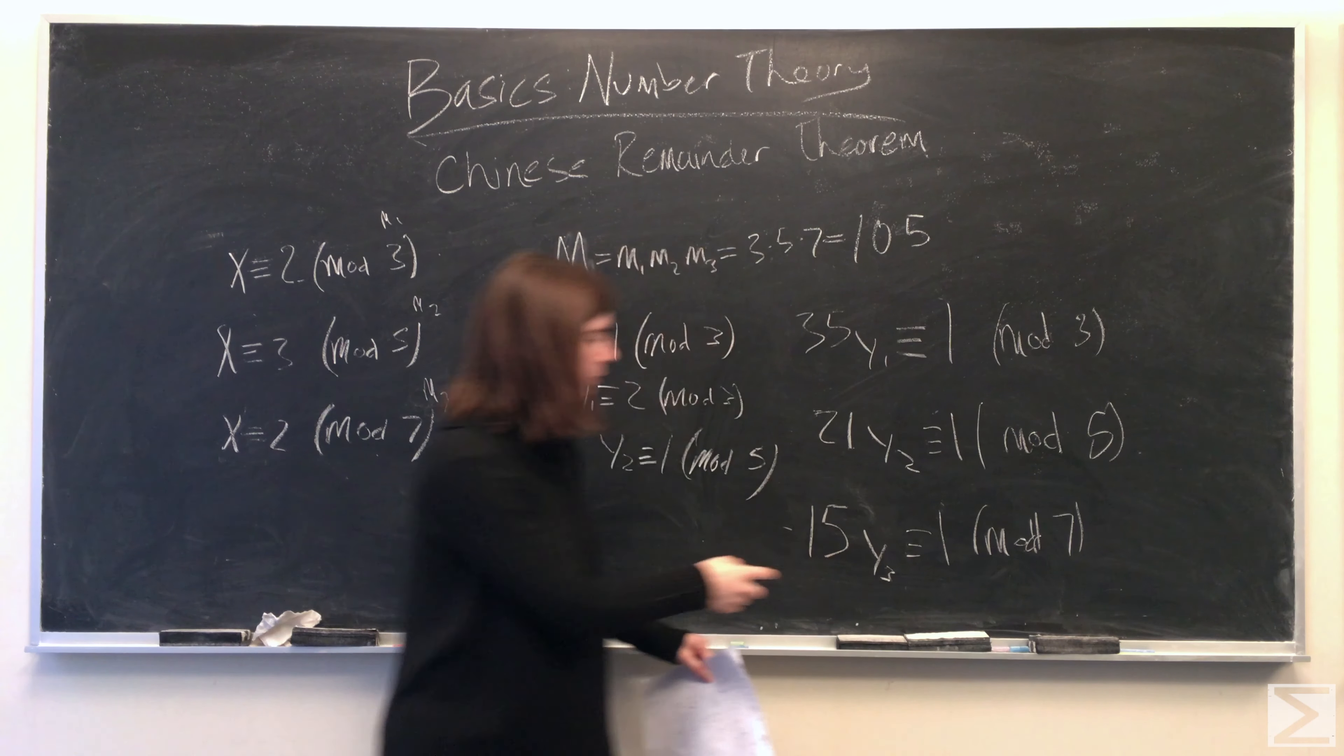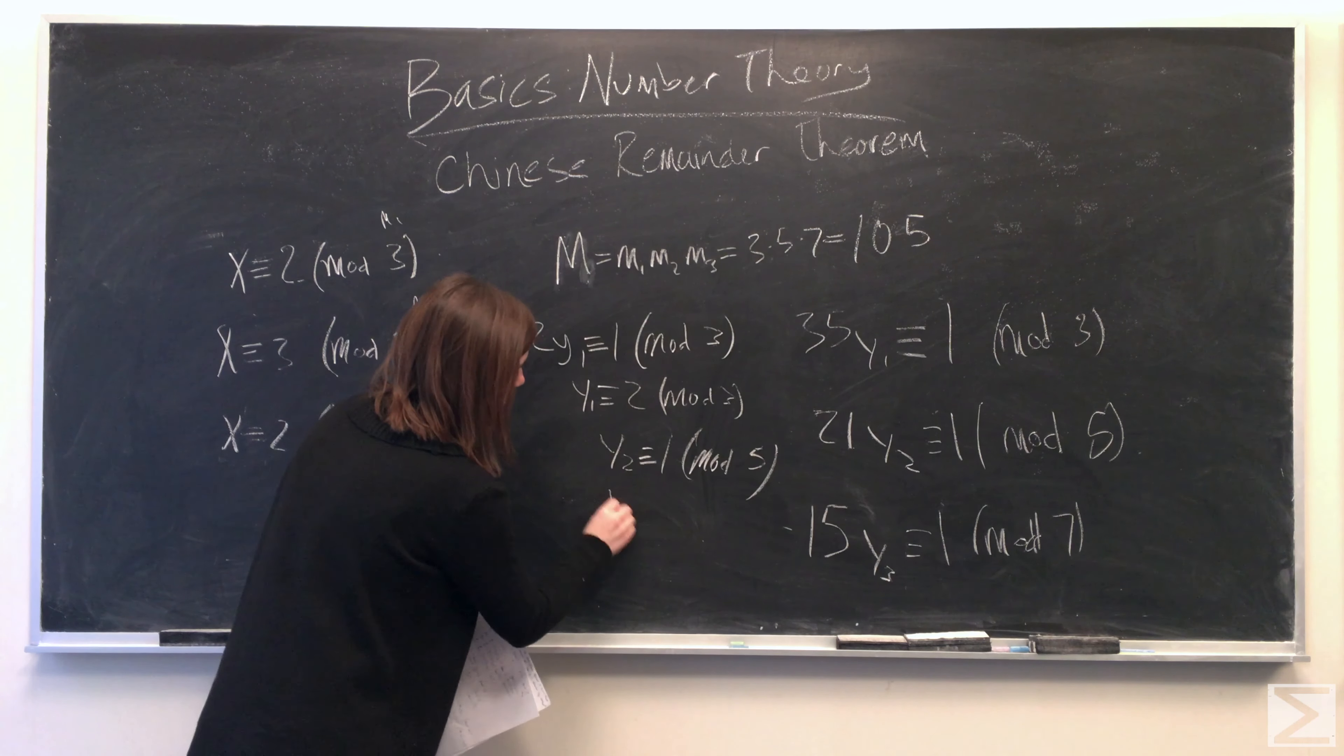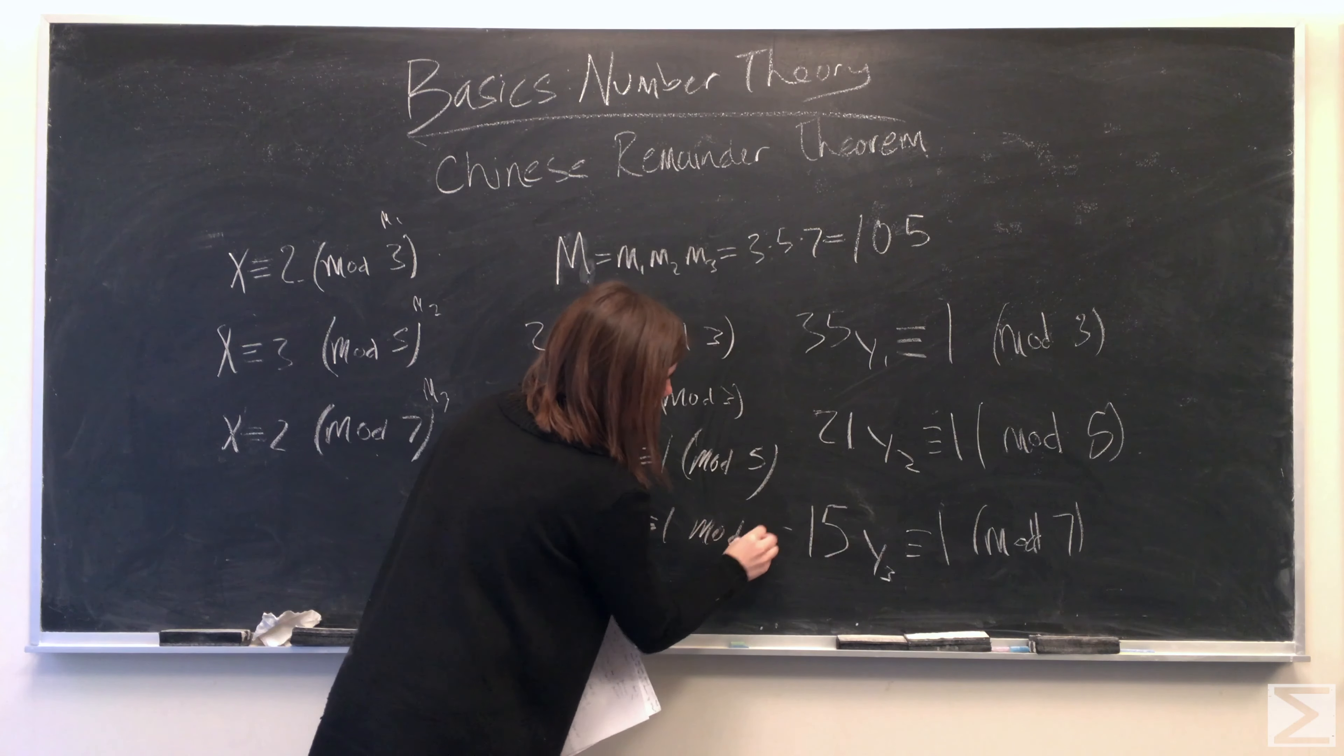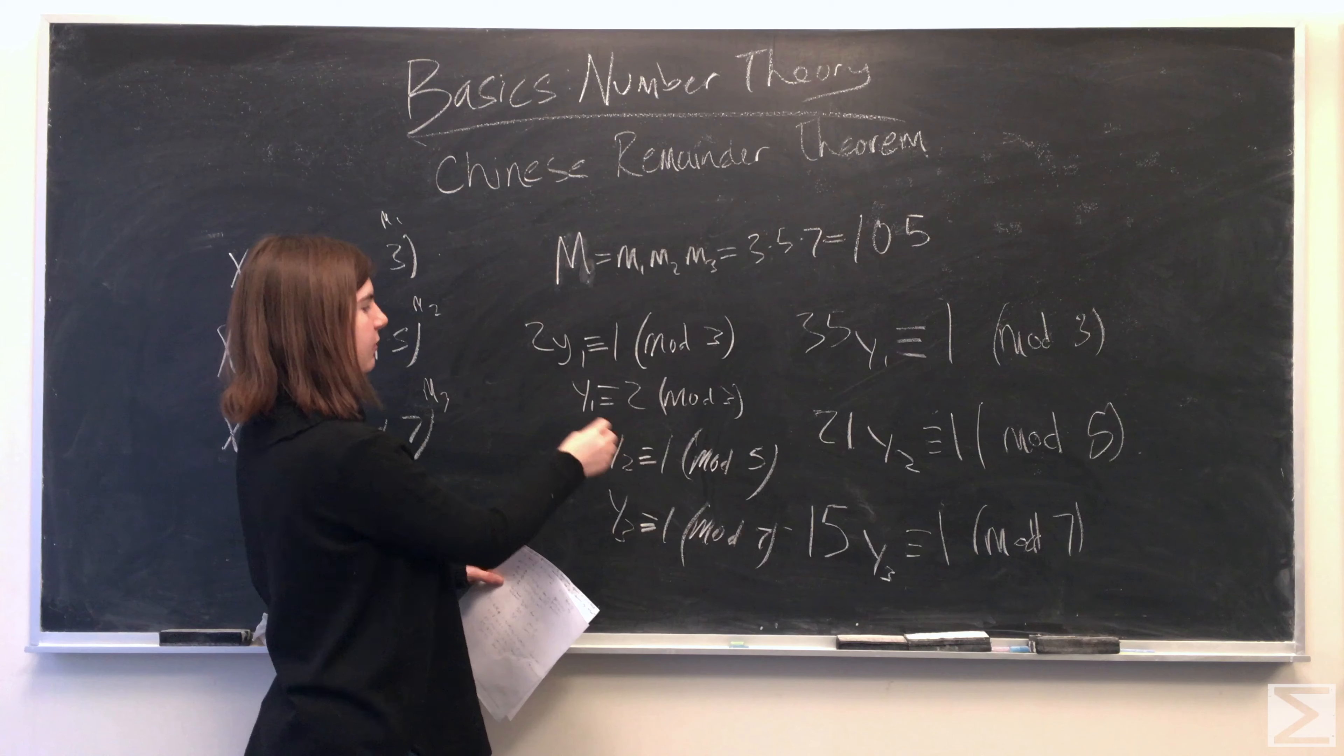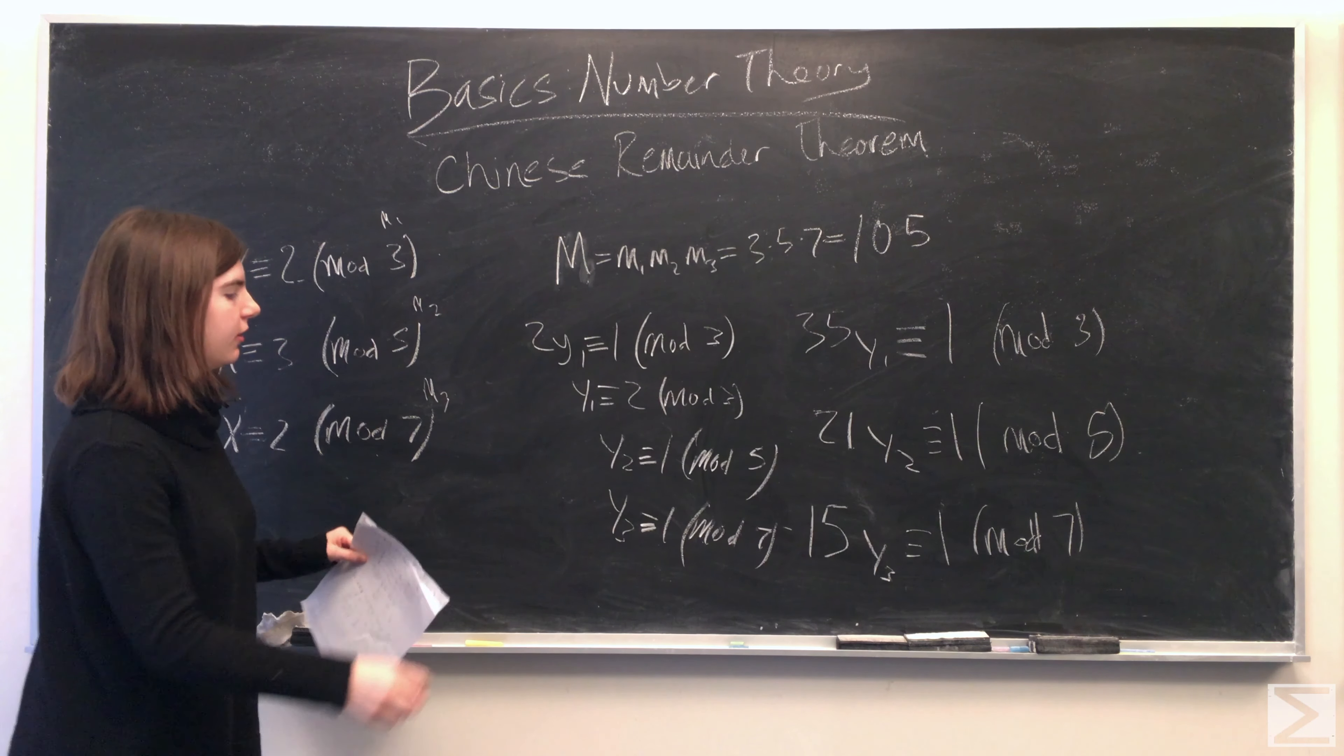And then for y3, 15 divided by 7 leaves a remainder of 1, so y3 equals 1. So now we found y1, y2, and y3, and our last step is to compute the solution.